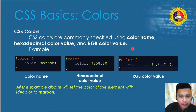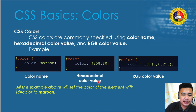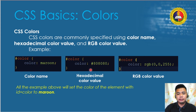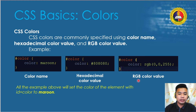In the first example, the color is set using the color name 'maroon'. In the second example, we use the hexadecimal value — you can identify it because it starts with a hashtag followed by six alphanumeric characters. In the third example, we use the RGB color value, which contains 'RGB' followed by three numerical values in parentheses. All three methods work for CSS colors.